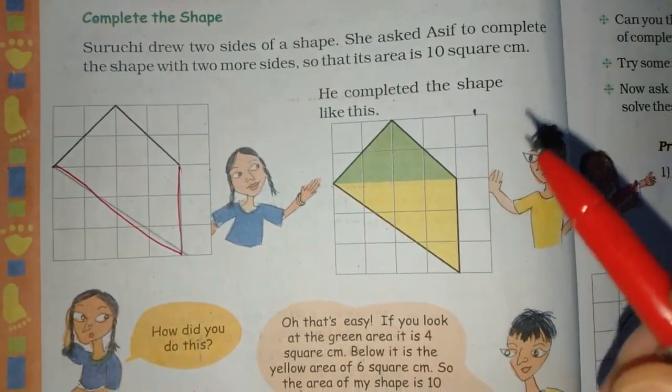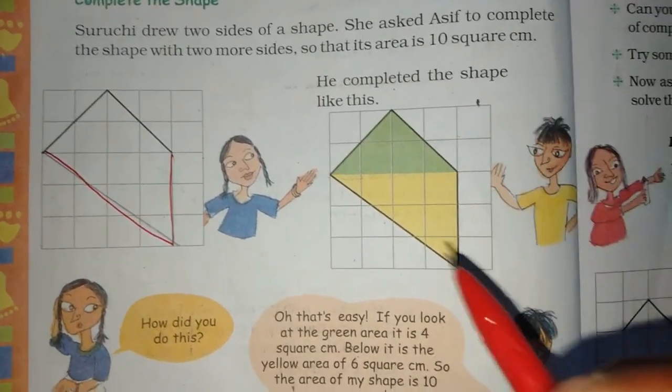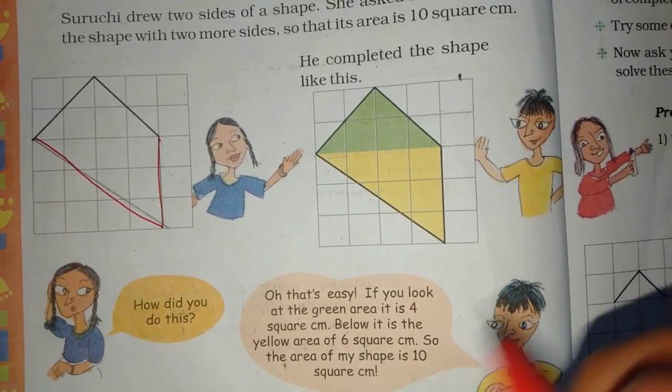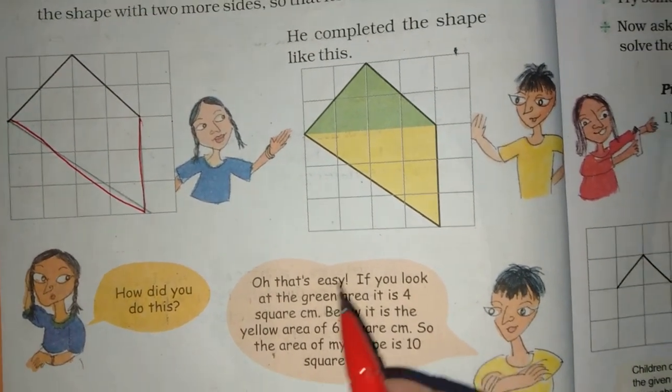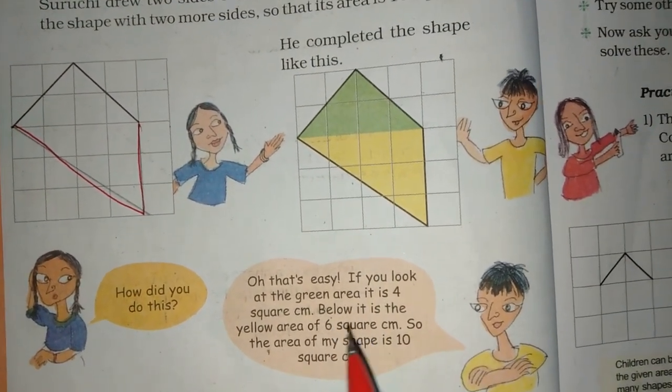Now we have to check if this is actually 10 square cm. How did you do this? That's easy. If you look at the green area, it's 4 square cm.